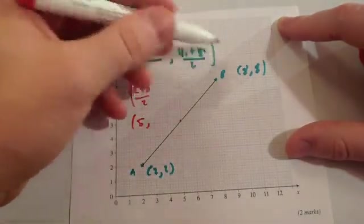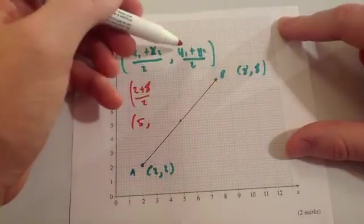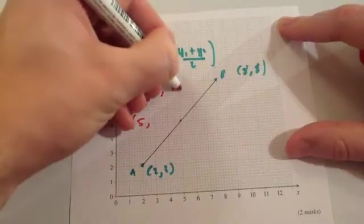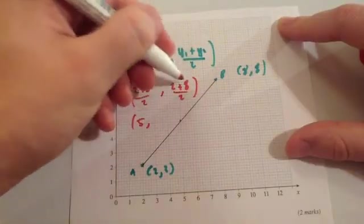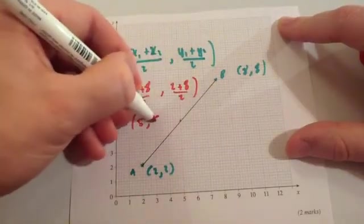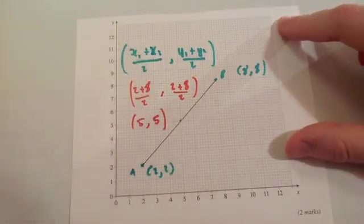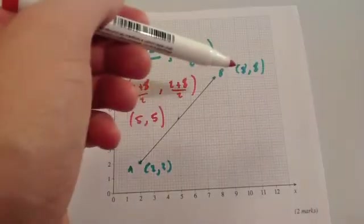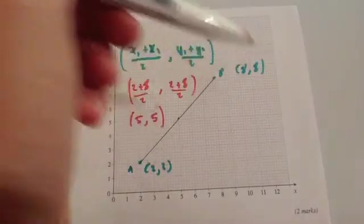And the second coordinate, for the y coordinate, you're going to add the y values together. So 2 plus 8, half it. So 2 plus 8 is 10, and half that is 5. So the midpoint would be 5, 5. To find the midpoint using the formula, you just add the x coordinates together and half it, and then add the y coordinates together and half it.